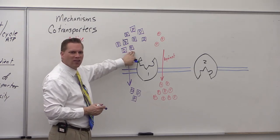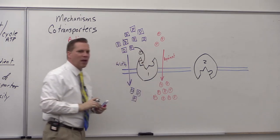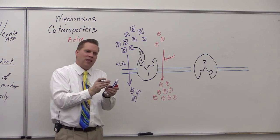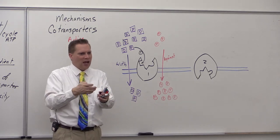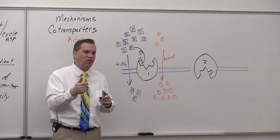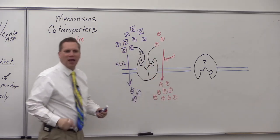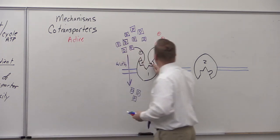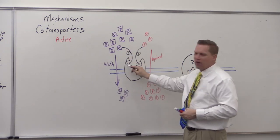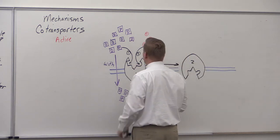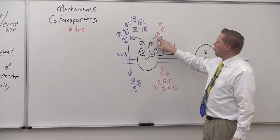Step 1: the driver molecule binds. When it binds inside that pocket, it's similar to cocking a gun — it's energized and ready. Step 2: the trigger is the binding of the passenger molecule. As soon as the passenger comes in and binds, it releases that energy. The energy from the driver's initial binding is what drives the conformational shift — that's step 3.